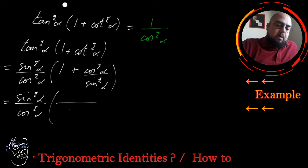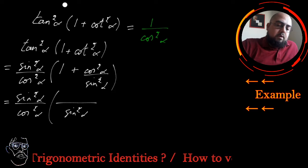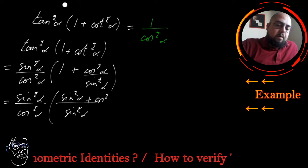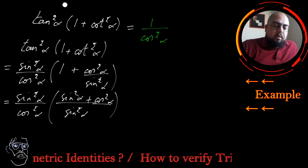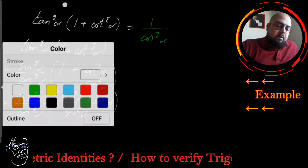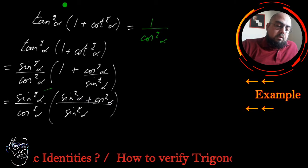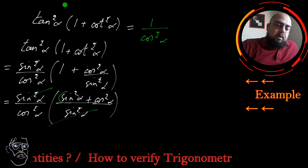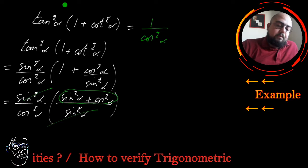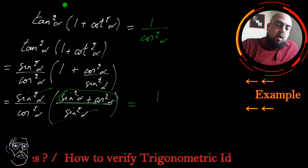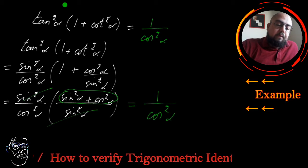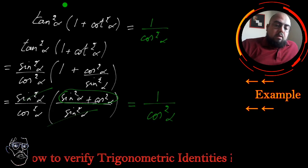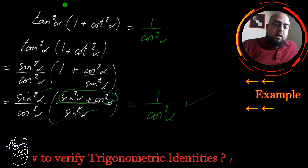I choose sine squared alpha as the common denominator for the second factor, giving sine squared alpha plus cosine squared alpha in the numerator. Since it's a multiplication, the sine squared alpha terms cancel out, and this whole part equals 1. The final answer is 1 over cosine squared alpha, verifying the identity.